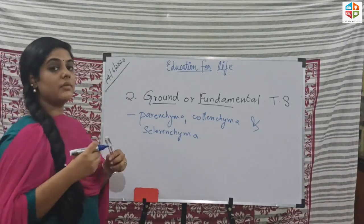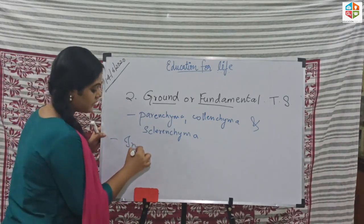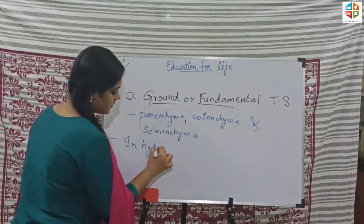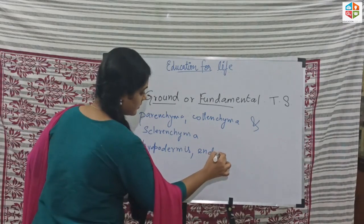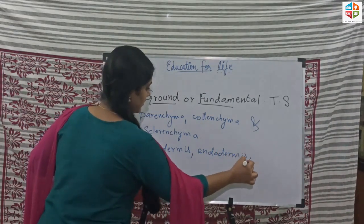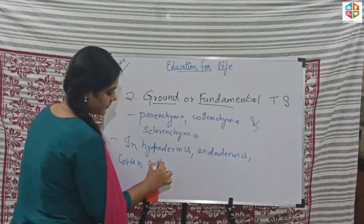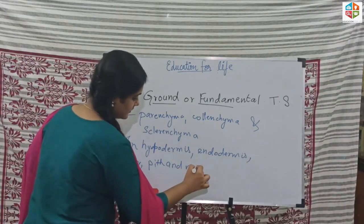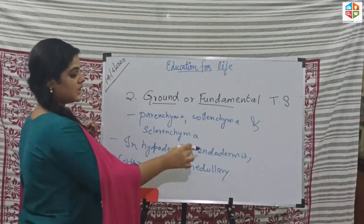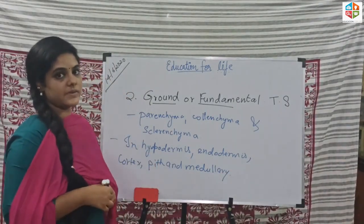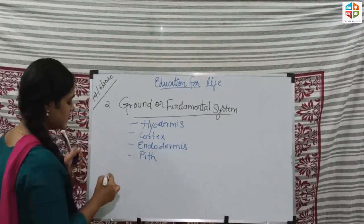Ground tissue is found in various regions of the plant including the hypodermis, endodermis, cortex, pith, and medullary rays. These are the regions where you find ground tissue in plants.